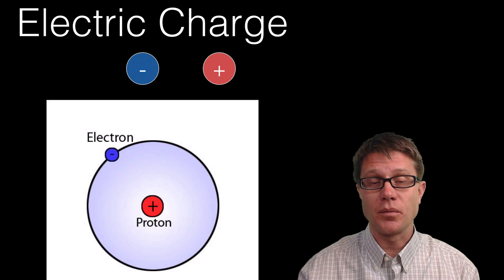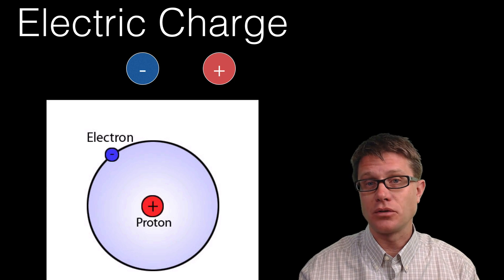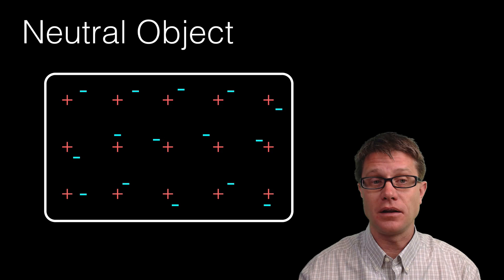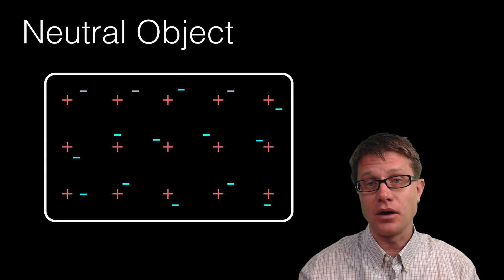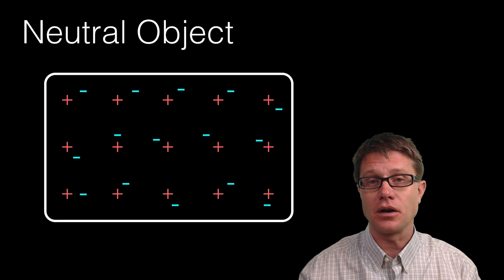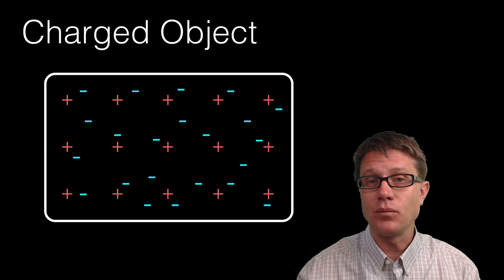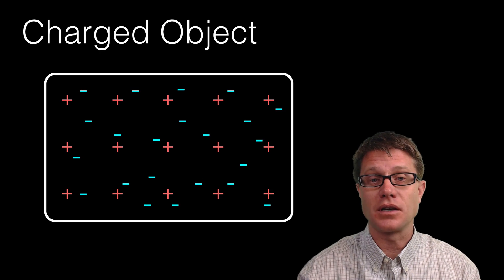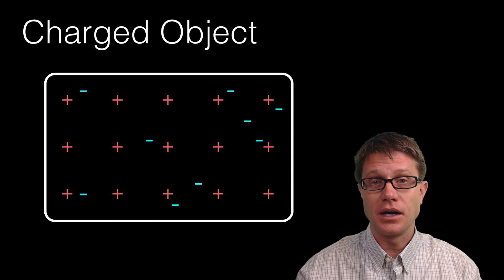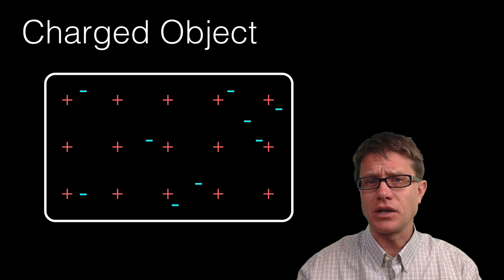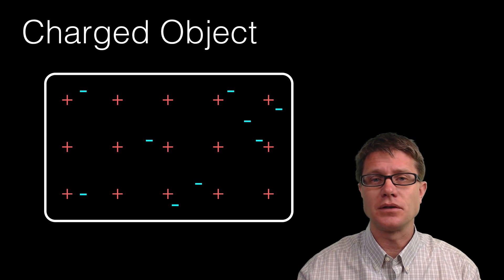What are these charges? It is going to be the electrons and the protons in the atoms that make up the material itself. If we have a neutral object, we have an equal number of positive and negative charges — they balance out and there is no net charge. A negatively charged object has way more negative charges. If we pull those electrons away, we get a positively charged object. Remember, the protons stay where they are — it is always the electrons that are moving.